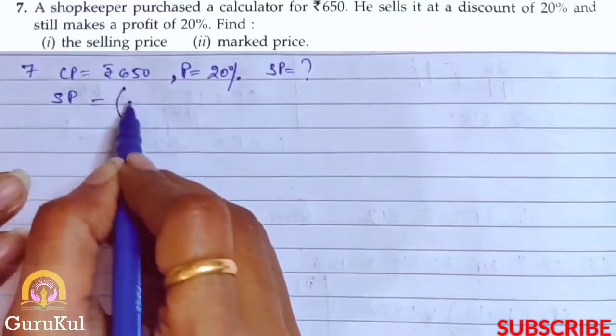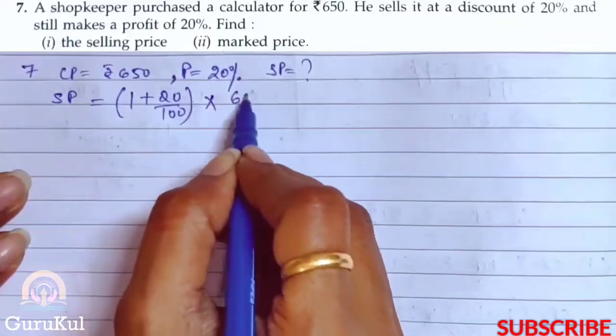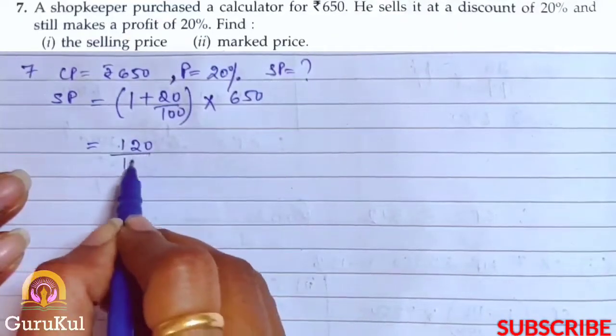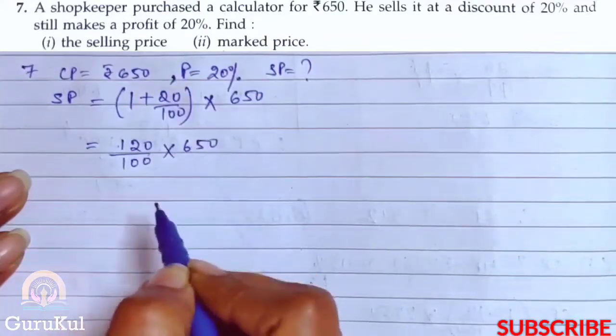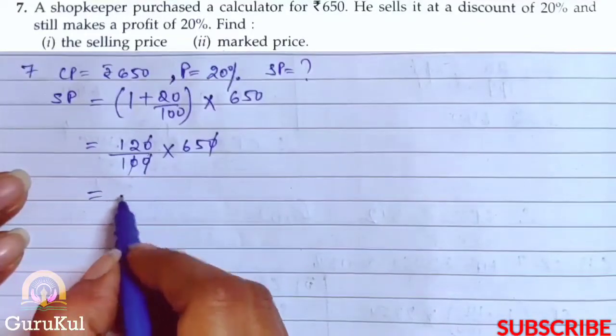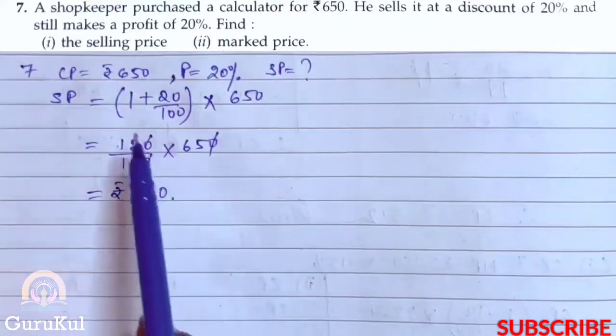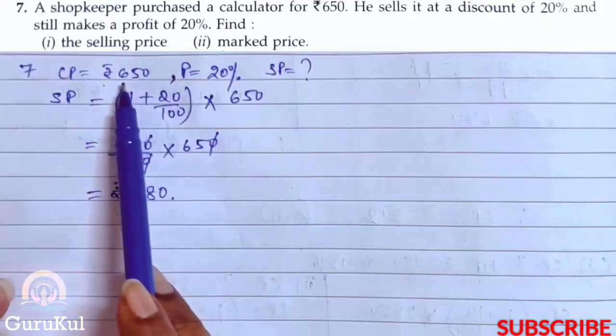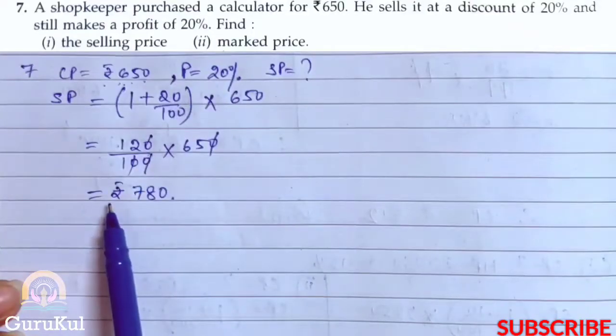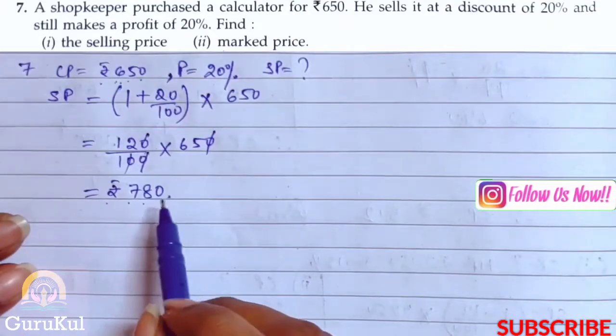So the formula is SP equals 1 plus 20% of cost price. This is 120 by 100 into 650. 0 and 0 got cancelled. So 65 into 12 gives us the amount of Rs.780. The calculator which was purchased at Rs.650 with 20% profit gives selling price of 780. So we got the selling price. Part 1 done.